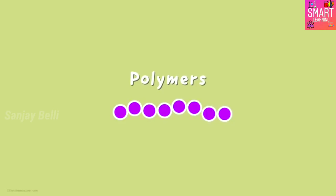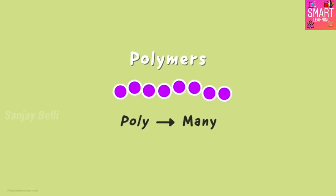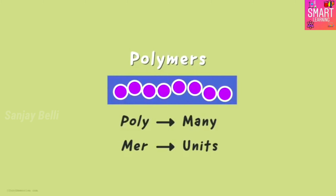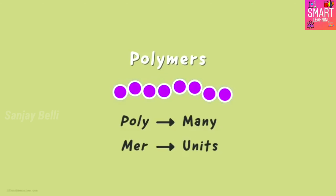What exactly do you mean by polymers? As the name suggests, 'poly' in Greek means many, and 'mer' refers to units. So can we say many repeating units join together? Yes, that is exactly what it means. And these units are all the same.